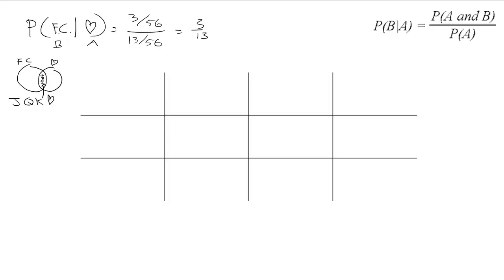If you think about it: you drew a card, you knew it was a heart — how many hearts are there? 13. Out of those hearts, how many are face cards? 3. You see how it comes right back to 'good over total.' Really, when you're doing conditional probability, you're still doing a simple good over total. The only thing that changes is the total. You're no longer looking at all 52 cards; you're looking at just those that meet the condition — the A condition. In a deck of cards, 13 of them are hearts, so that becomes your new total, and out of that new subset, 3 are face cards: 3 out of 13.